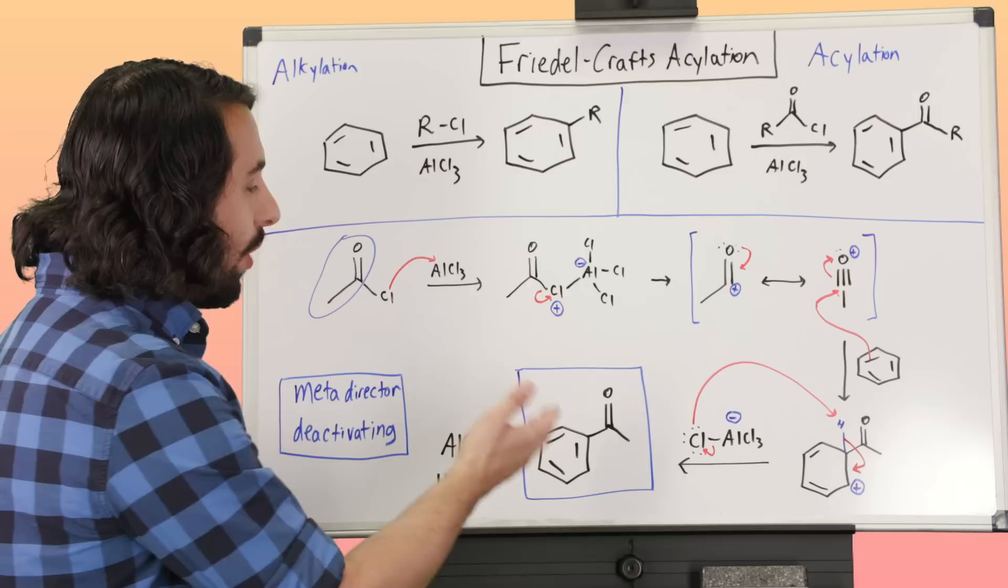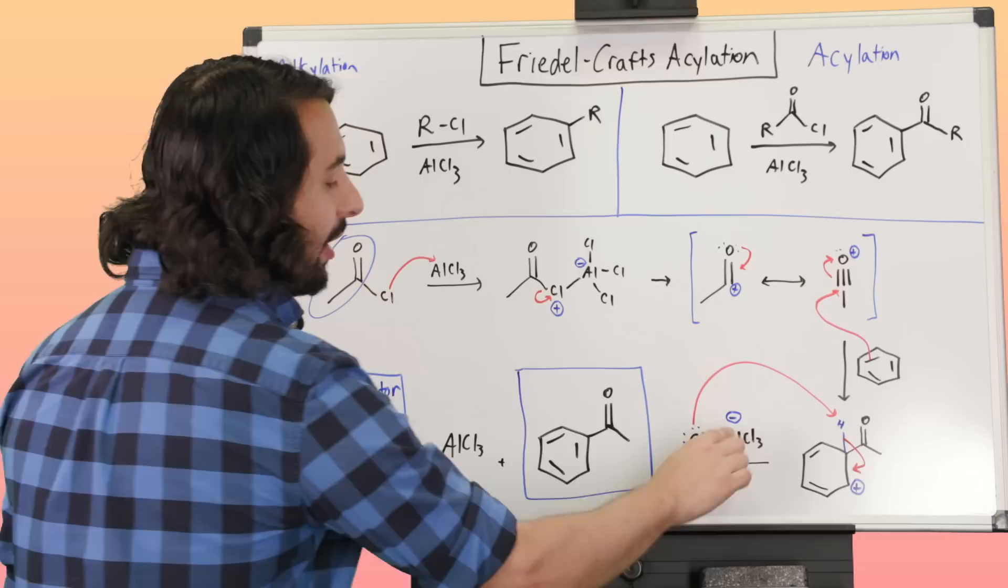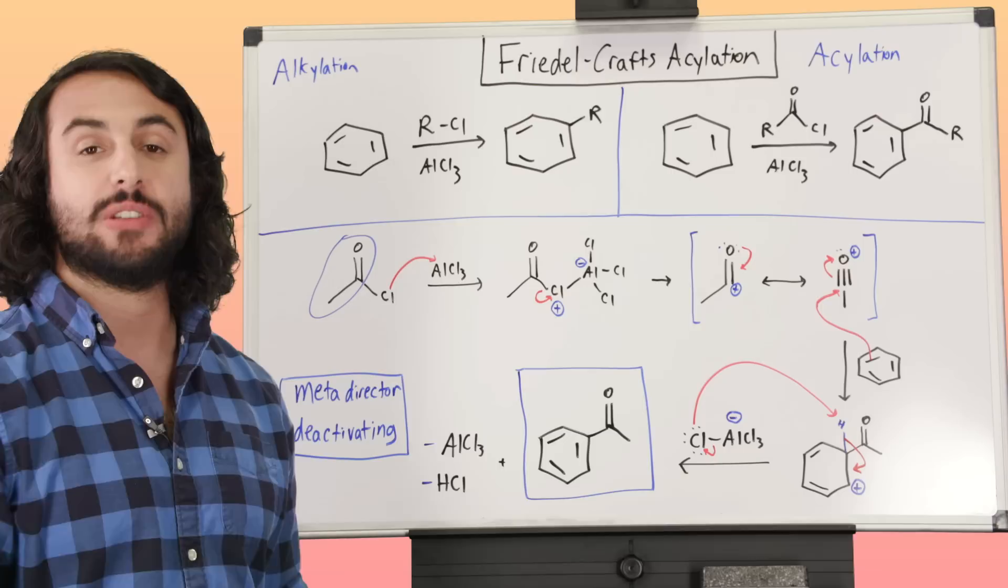So, and then what we do want to understand is that Cl minus grabs the proton, that's going to give us our HCl byproduct, and then of course, once this bond leaves, this aluminum loses that electron that chlorine initially gave it, so it returns to neutral charge. That is our regeneration of the aluminum trichloride catalyst. That's very important, because in order to be a catalyst, it must be regenerated so that it can go and make some other reactions happen in solution.